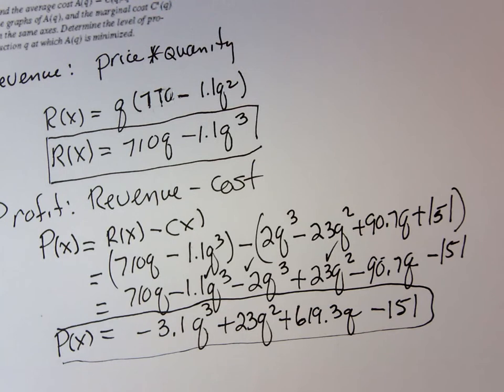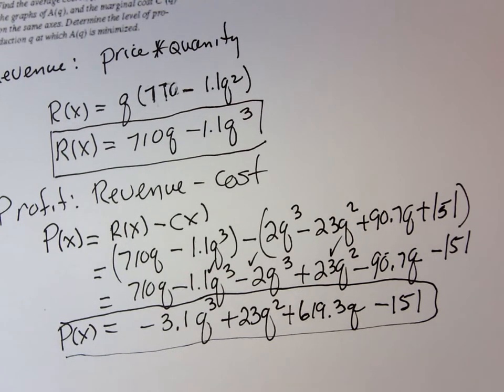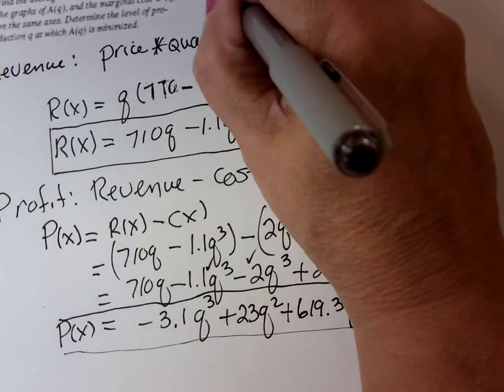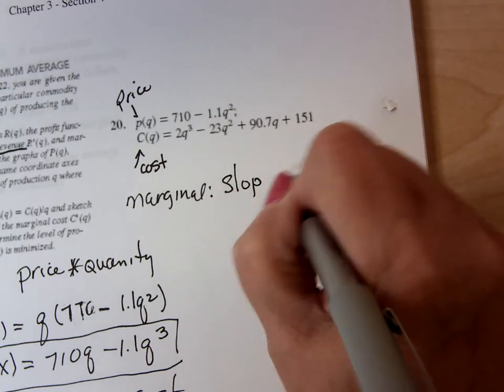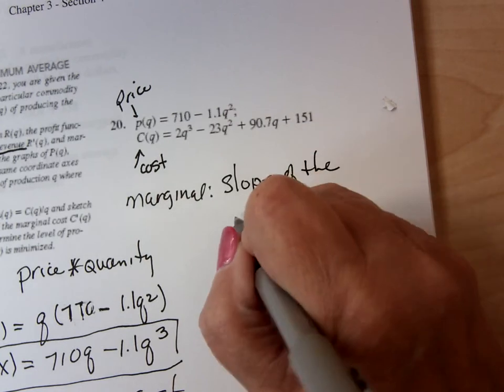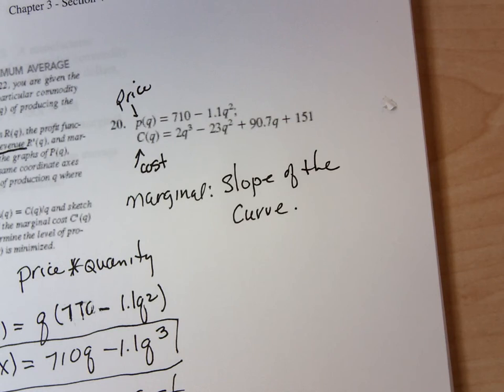And then it says, okay, now I have the profit function. I have the revenue function. That's part A. Then it says, find the marginal revenue. Now, you're going to hear in economics the word marginal all the time. Marginal cost. Marginal. And what they'll say all the time is that marginal means it is the slope of the, whatever curve that is, or graph. Slope. Which means any time they say the word marginal, what's marginal mean to us?